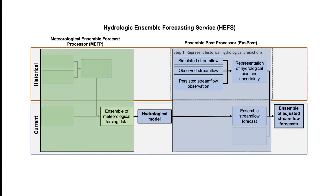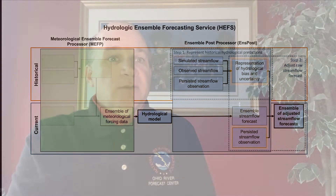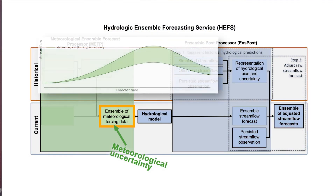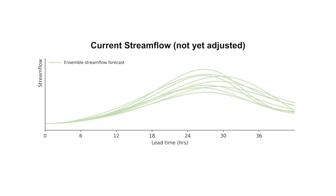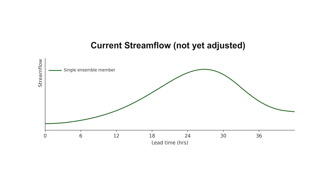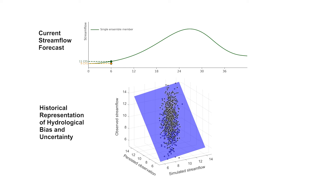The second step in the ONSPOST process is to adjust the ensemble streamflow forecast based on this historical representation together with the current persisted observation. This step will adjust for bias and combine the meteorological uncertainty generated by MEFP with the hydrological uncertainty produced by ONSPOST. To illustrate how ONSPOST does this, let's walk through the process for a single ensemble member at multiple lead times. To produce an adjusted streamflow forecast at a 6-hour lead time, ONSPOST first uses the streamflow forecast at 6 hours and the persisted observation carried forward from the prior observation 6 hours earlier.